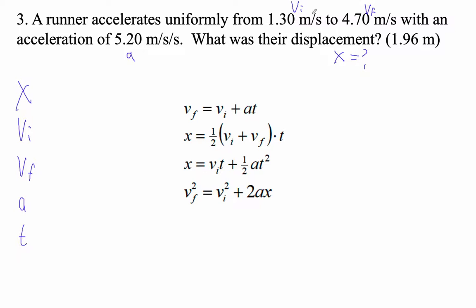So this is 1.3, our initial velocity, right? 1.3 meters per second. 4.7 is our final. This must be our acceleration. Because it's in meters per second squared, it also says acceleration. These are good clues, right?